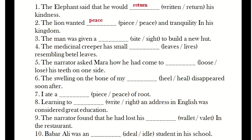Look at the third one: 'The man was given a dash to build a new hut.' There are two words — sight and site. Sight means sthla and site means nota. The correct answer is S-I-T-E, site.